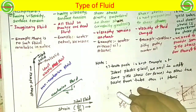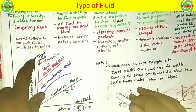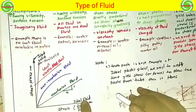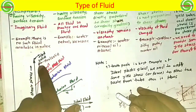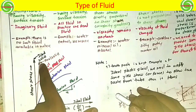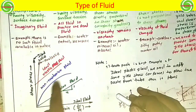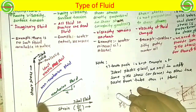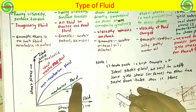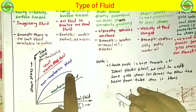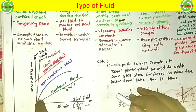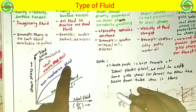Let me explain in the form of a diagram. This is the shear stress axis and this is the shear strain axis. This line shows the ideal solid, and this is the ideal fluid line. This line shows the real solid. This is the Newtonian fluid, in which shear stress is proportional to shear strain — as shear stress increases, shear strain also increases linearly. The non-Newtonian fluid shows a curved relationship between shear stress and shear strain, as the relationship is not constant.